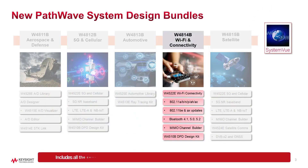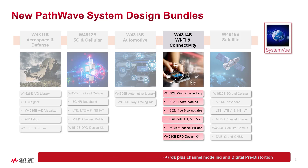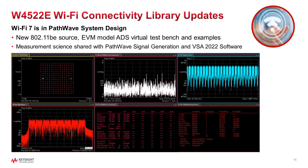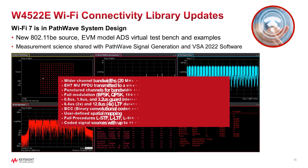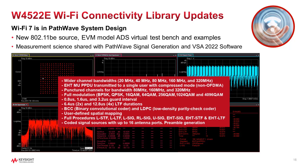The W4814B Wi-Fi and connectivity bundle encompasses our WLAN and Bluetooth libraries with all the main 802.11 standards up to 802.11BE, plus Bluetooth 4.1, 5.0, and 5.2. The 802.11BE capability includes a new source EVM measurement, virtual test bench for use with ADS, and new examples.